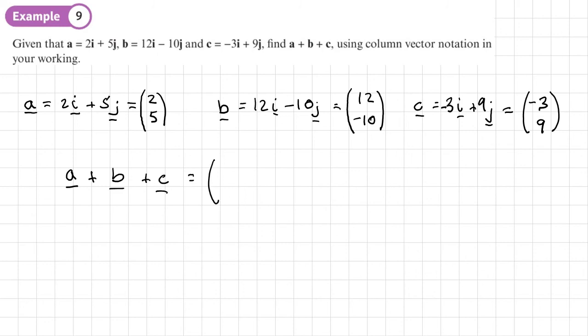So if I'm going to do A plus B plus C, I'm going to do 2, 5 plus 12, negative 10, plus negative 3, 9. So the top row is going to be 2 plus 12, plus negative 3, minus 3. And the bottom row is going to be 5, plus negative 10, plus 9. So all we do now is work those out. So 12 plus 2 is 14, take away 3 is 11. 5 minus 10 is negative 5, plus 9 is 4.